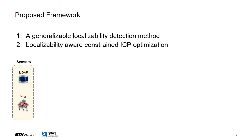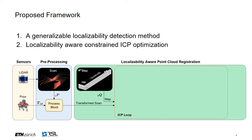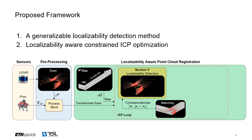Our framework uses the prior from the robot to undistort the point cloud and transform the scan to the map frame. Then, alongside the point cloud map, this transformed scan is fed to the ICP loop. The matching process calculates the correspondences by using the map and the transformed scan. These correspondences are utilized by our localizability detection module, which estimates the localizability status of each optimization direction in a fine-grained, generalizable fashion.